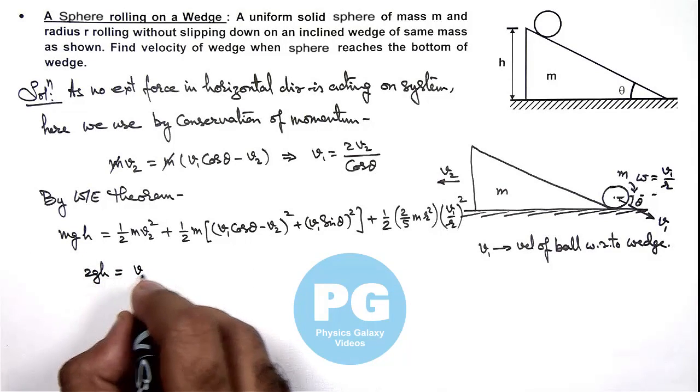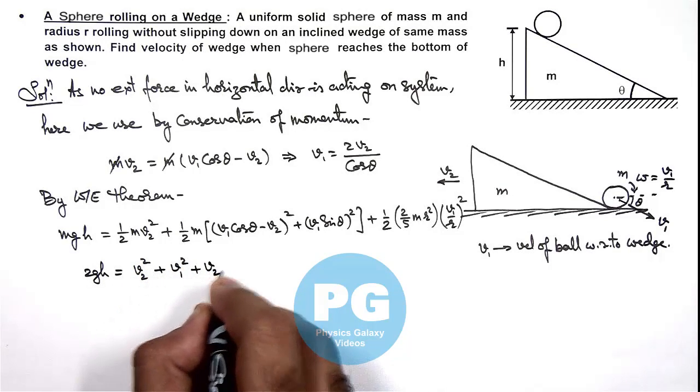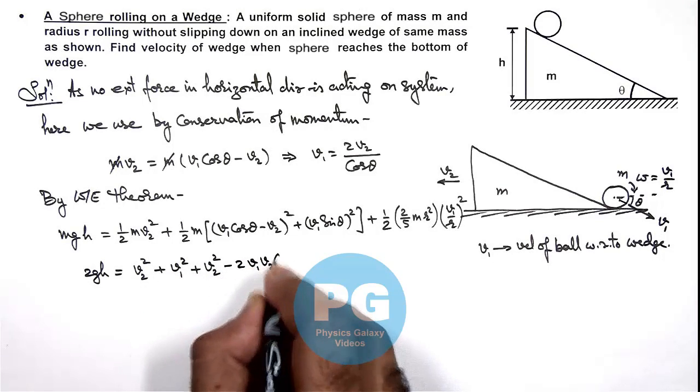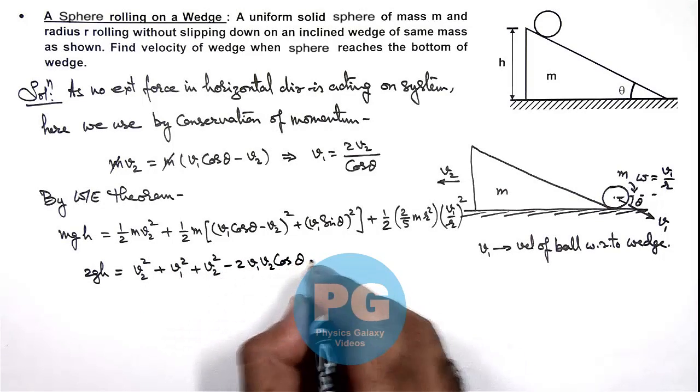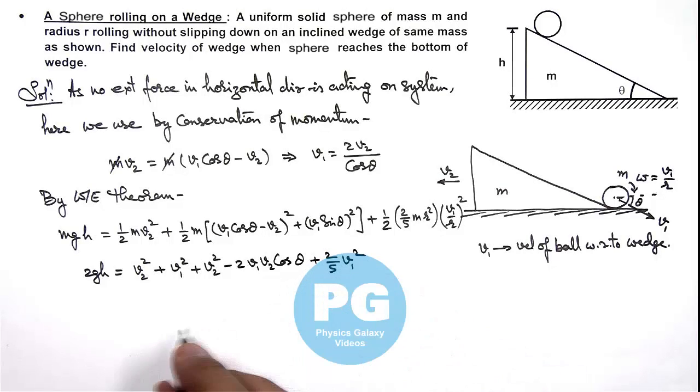v2² plus v1² plus v2² minus 2v1 v2 cos θ, plus v1² plus v1², which is (2/5)v1².